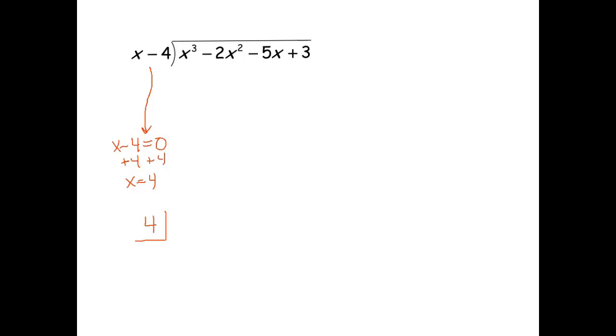The next thing I want you to do is to take the stuff that's getting divided and use all of the coefficients. So for instance, the coefficient of the x cubed is a 1. Here is negative 2, negative 5, and 3.